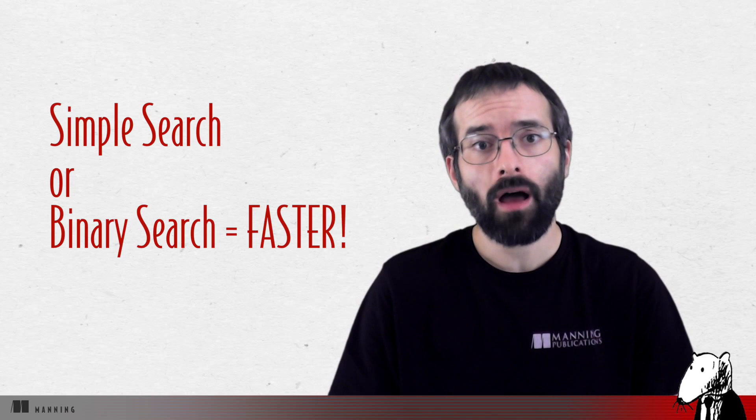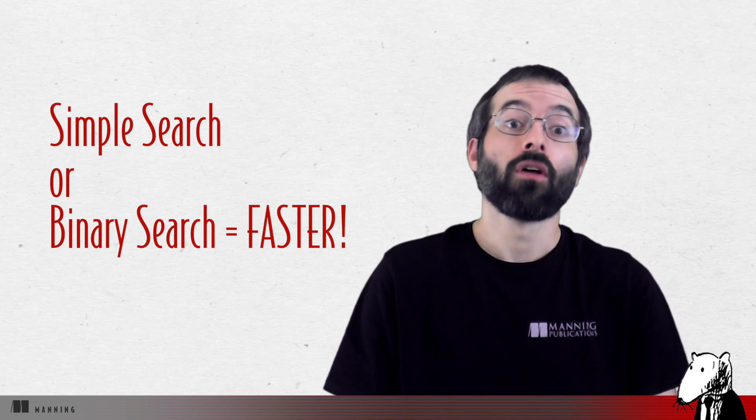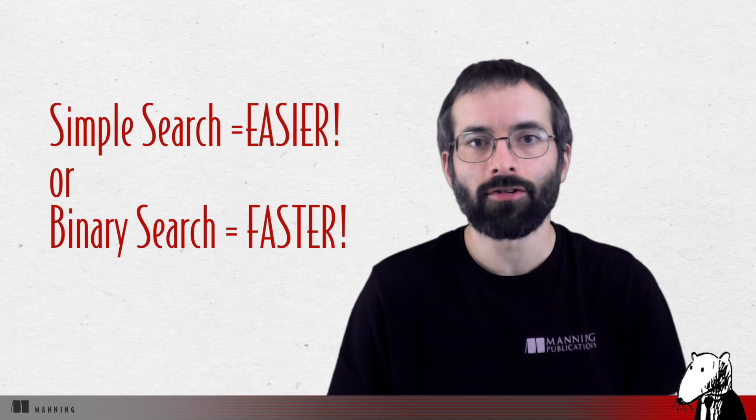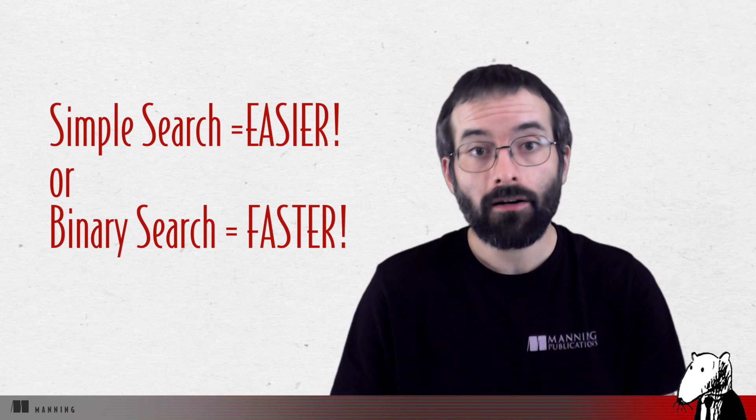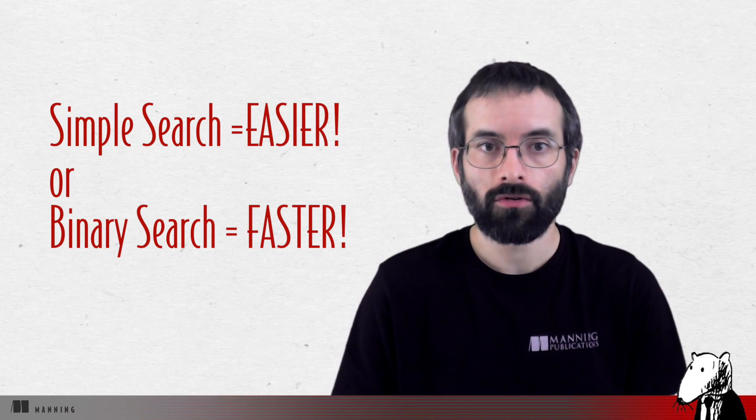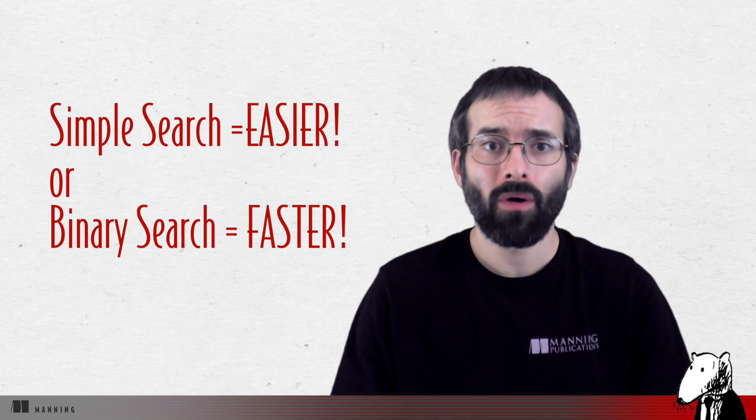The algorithm needs to be both fast and correct. On one hand, binary search is faster, and Bob has only 10 seconds to figure out where to land. Otherwise, the rocket will be off course. On the other hand, simple search is easier to write, and there's a lower chance of bugs being introduced. And Bob really doesn't want bugs in the code to land a rocket. To be extra careful, Bob decides to time both algorithms with a list of 100 elements.